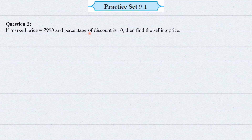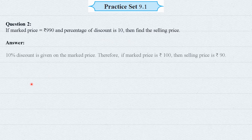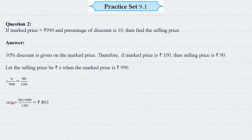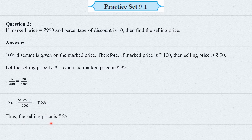Question 2: Marked price = Rs. 990, discount = 10%. Since 10% discount is given, if marked price is Rs. 100, selling price is Rs. 90. Let the selling price be Rs. X when marked price is 990. Using proportion: X/990 = 90/100. Cross multiplying: X = (90 × 990) / 100 = Rs. 891. Thus the selling price is Rs. 891.